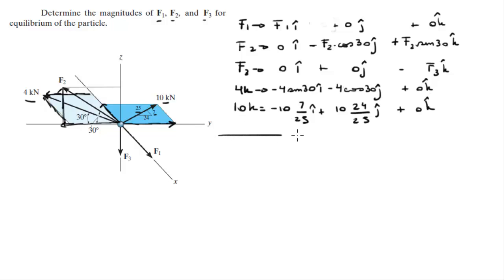Now we have all the forces in Cartesian vector form. When we add them together, we get 0 i + 0 j + 0 k because we're in equilibrium. We can form equations by adding the i components, j components, and k components separately and setting each equal to zero.